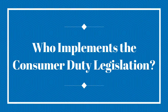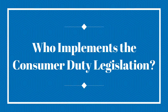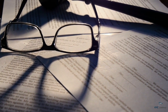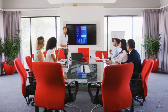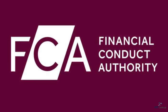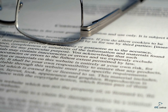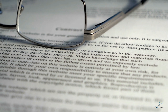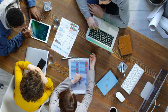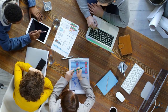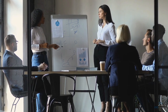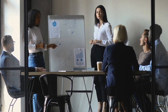Who implements the consumer duty legislation? To ensure compliance, consumer duty legislation is typically enforced by regulatory bodies or consumer protection agencies. In the UK, the Financial Conduct Authority (FCA) implements the legislation in regard to consumer duty. Their role is to make sure industries comply with the relevant legislation and monitor how they look after their clients and customers. As of July 31st, 2023, the FCA will be making the following changes to the legislation.